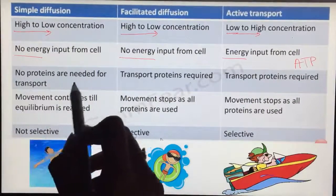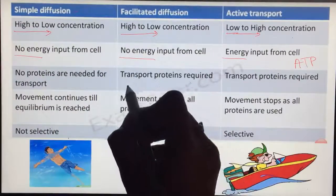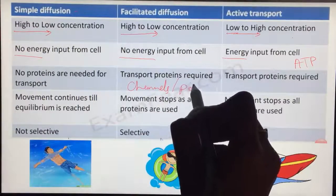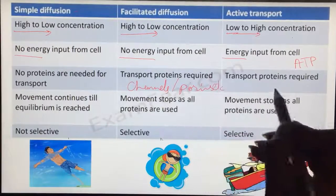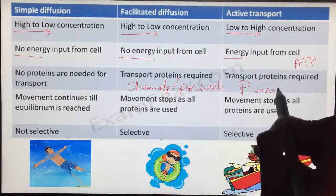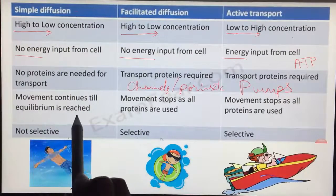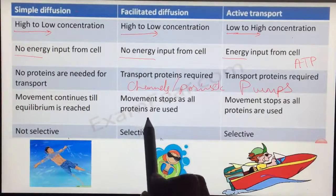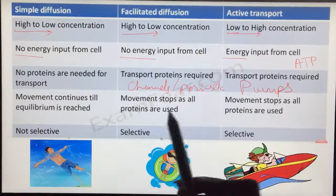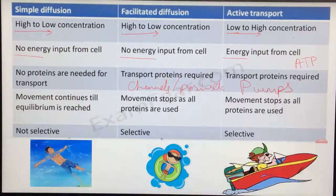No proteins are needed for transport through simple diffusion, but for facilitated diffusion the proteins are required - channels and porins. For active transport, pumps are required. The movement continues till equilibrium is reached. But if all the membrane proteins are involved in transfer, then further movement is not possible until the proteins get free and transfer another molecule. Likewise, same in active transport.